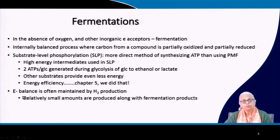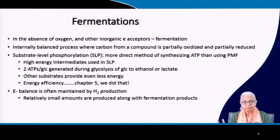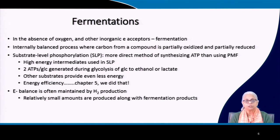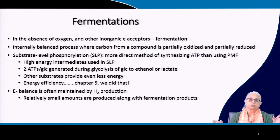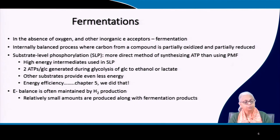One key to understanding all these processes is that the electron balance must be maintained — whatever is donated by one substrate must be picked up by the electron acceptor. The simplest way to think about fermentation: split glucose equally into the most reduced form (methane) and the most oxidized form (CO₂). H₂ gas is a key intermediate; relatively small amounts are produced along with fermentation products and must be taken up very quickly.